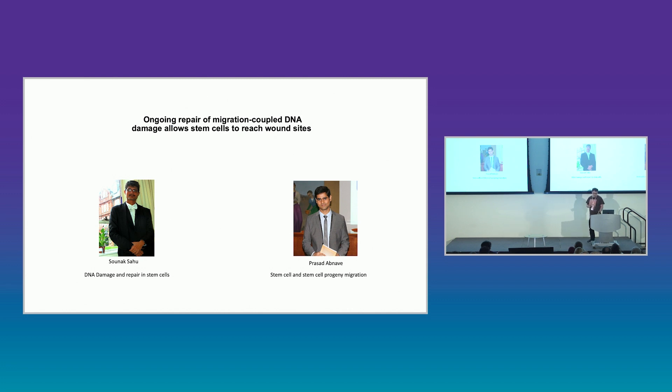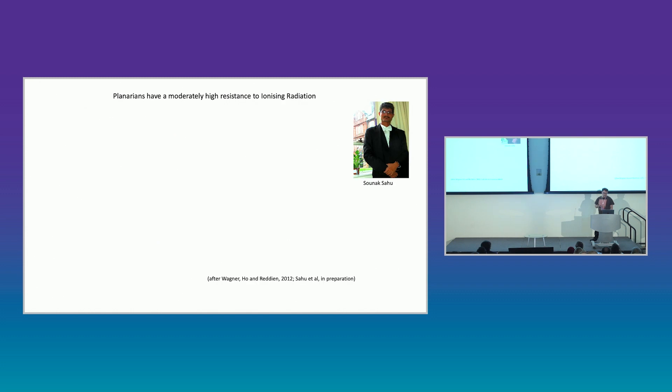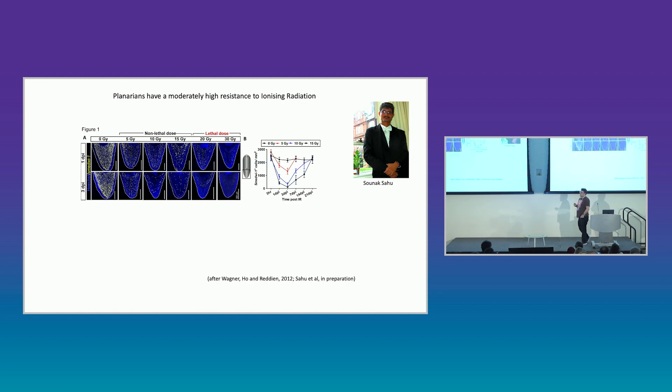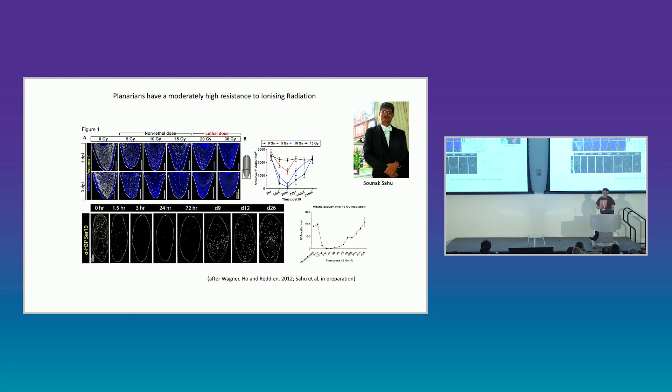And now I'm going to look at more cell biological work, because I thought this audience would find it interesting. This is work done by Sounak Sahu and Prasad Abnave in collaboration. Sounak was interested in the fact that planarians have a relatively high resistance to ionizing radiation. And that's because at high doses of irradiation, some stem cells stick around, they don't die, and they're competent to repopulate the animal, and the animals are fine. So up to about 15 gray, it's still a sublethal dose. At 20 gray, you still have some stem cells left, but they're not competent to repopulate, and those animals all die. By analogy, you or I could probably take 1.5 gray whole body of radiation before we'd be toast.